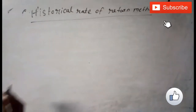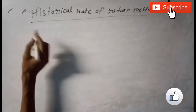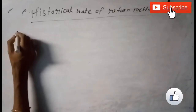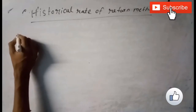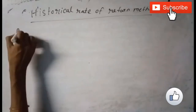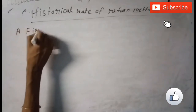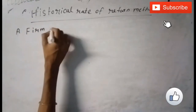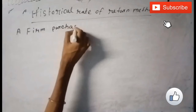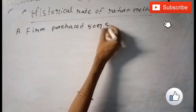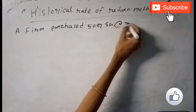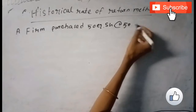There is a formula for calculating KE using the historical rate of return method. But before writing the formula, we will understand this numerical problem. A firm purchased 50 equity shares at the rate of 50 rupees each.